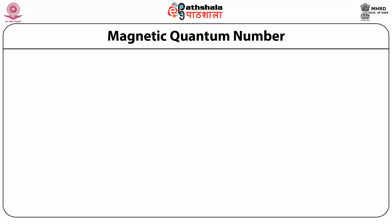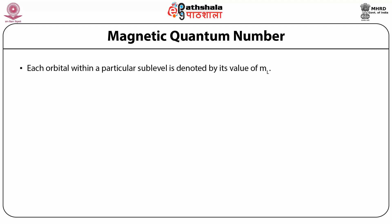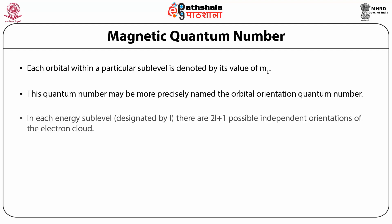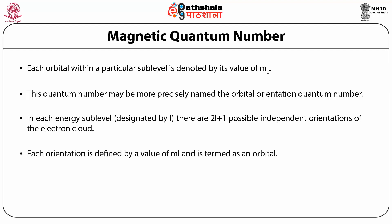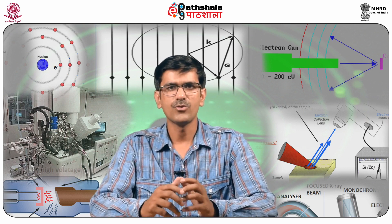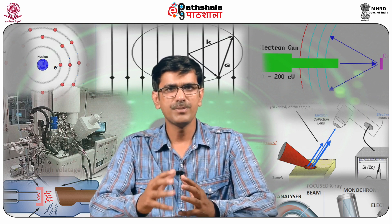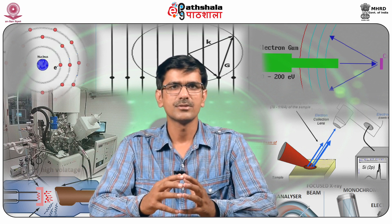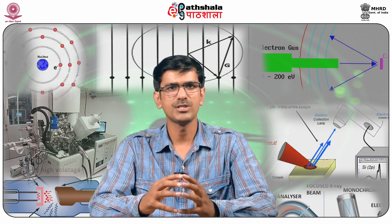Each orbital within a particular sub-level is denoted by its value of M, the magnetic quantum number, more precisely named the orbital orientation quantum number. In each energy sub-level designated by l, there are 2l + 1 possible independent orientations of the electron cloud, each defined by a value of M and termed an orbital. All orbitals in a given sub-level are of equal energy and termed degenerate. In the presence of a magnetic field, their different orientations lead them to have different energies. Three quantum numbers N, L, and M are required to specify a particular orbital.